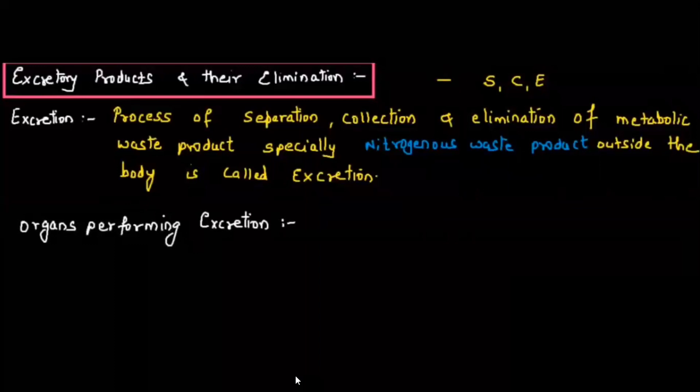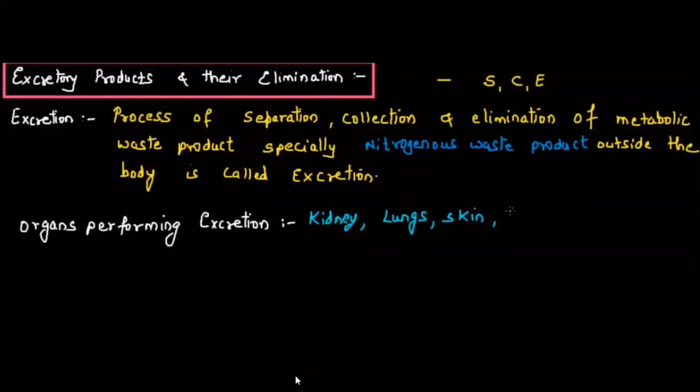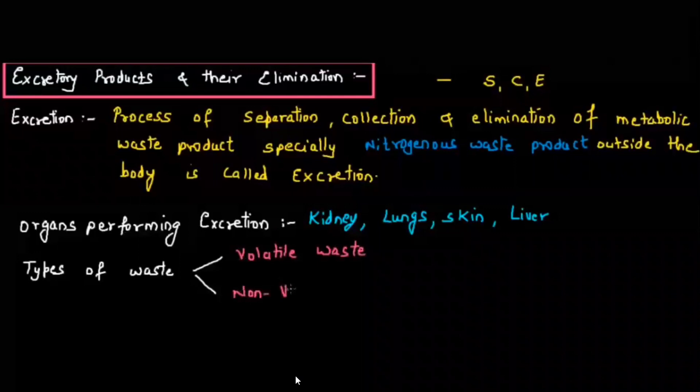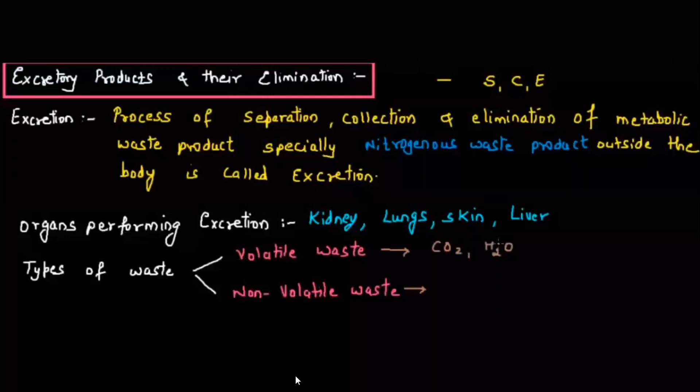For humans, the organs performing excretion are kidney, lungs, skin, and liver. There are two types of waste normally generated in our body: volatile waste and non-volatile waste. Volatile waste is in the form of gas — carbon dioxide and water — and it goes out through the nose. Non-volatile waste includes urea, uric acid, ammonia, etc., which are removed out of the body via the process of urination.